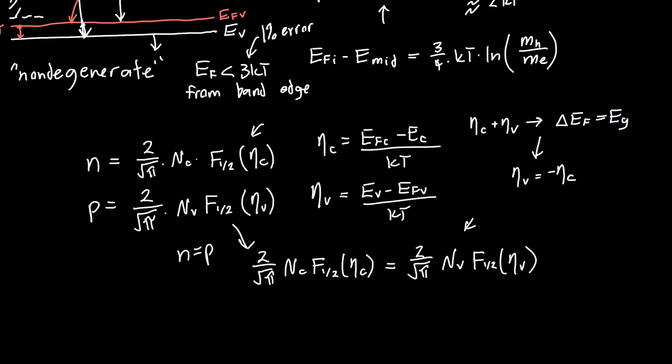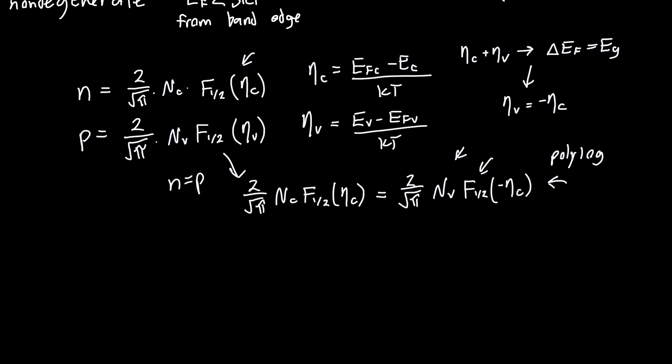So we can just replace that in this equation underneath. So now it's just the Fermi Dirac integral of minus eta c. You could actually solve this on a computer, especially if you have access to Mathematica because this f1/2 function is just the polylogarithm with some subtleties attached. It's just a built-in function that you can evaluate. But if you don't want to do that and you want to just use a regular calculator, then we need to make some approximations.